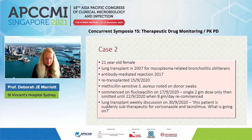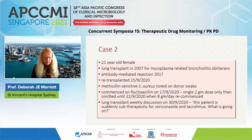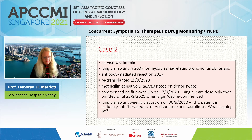The next case is from our heart-lung transplant clinic: a 21-year-old woman who had a lung transplant in 2007, underwent antibody-mediated rejection, and was re-transplanted in September of last year. Methicillin-sensitive staph aureus was noted on donor swabs and she was commenced on flucloxacillin two days after transplant. However, she received only a single two-gram dose, then it was accidentally omitted until the 22nd when she was recommenced on the standard dose of 8 grams per day. The following week, the registrar reported this patient was suddenly subtherapeutic for voriconazole and tacrolimus.